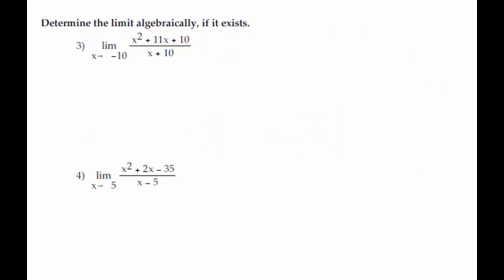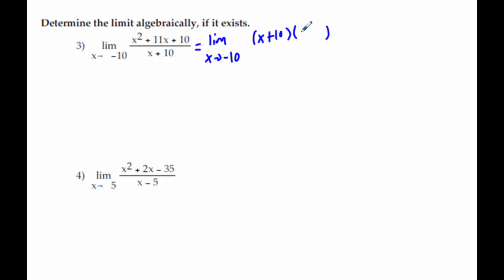On problems three and four, these also shouldn't be that difficult. It says we want to do it algebraically, which means we'll need to show some work. We're going to factor the top and the bottom if we can — this only factors on top. So we ask what multiplies to get 10 and adds to get 11: that's 10 and 1, which is convenient because now something will cancel. The x plus 10s cancel, which means I have the limit as x approaches negative 10.